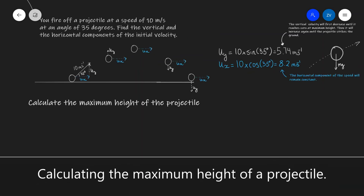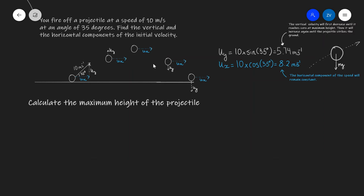Let's calculate the maximum height of this projectile. In order to do so, we're going to be using the SUVAT equations applied in the vertical plane. The most appropriate equation to use is v² = u² + 2as, and I'm going to be applying that for the region between the launch point and the maximum height.